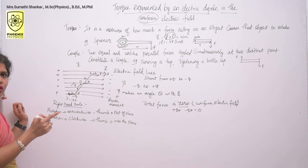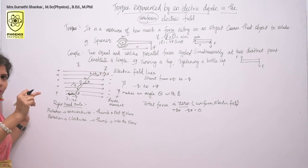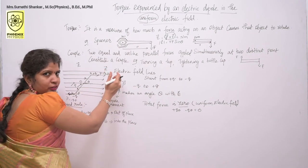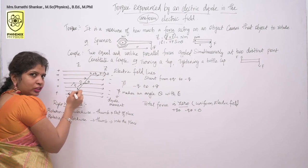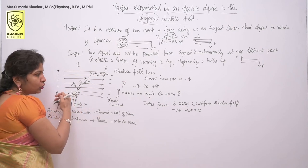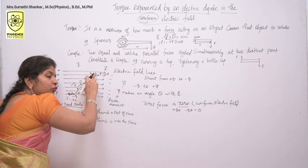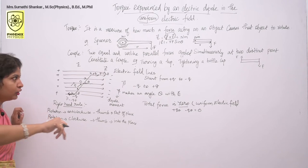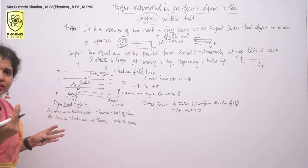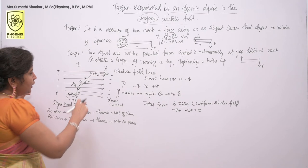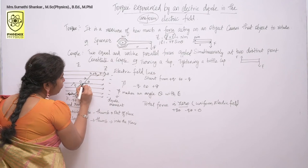Why is the net force zero? These two forces are equal in magnitude but oppositely directed — one force is in the direction of the electric field and the other is in the opposite direction. So the total force is zero. But these two forces will constitute a couple. Torque is nothing but a turning effect, so the torque rotates the dipole about the midpoint O.